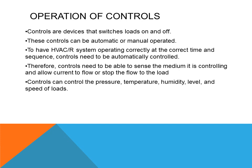Other things you may find are operator-type controls. Controls are devices that switch loads — such as a motor, heater, or light bulb — on and off. A light switch on the wall is a control, physically operated by a person. These controls can be automatic or manual, but in the HVAC field they are often automatic, such as a room thermostat that turns air conditioning on and off based on room temperature. Controls need to sense the medium they are controlling and allow current to flow or stop the flow to the load.